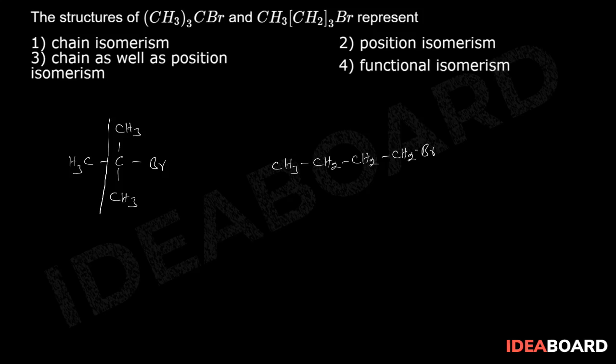In tertiary butyl bromide, three carbon atoms are present in straight chain. In n-butyl bromide, four carbon atoms are present in straight chain. These two differ in number of carbon atoms in main chain, so they are called chain isomers.